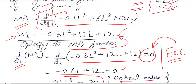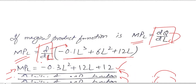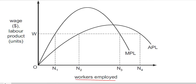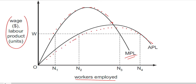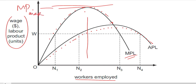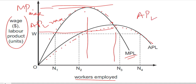We have maximized both the average product of labor and the marginal product of labor. Looking at the diagram, the horizontal axis shows labor and the vertical axis shows the labor product. The marginal product of labor curve lies above the average product of labor curve for this segment. We identified the maximum point of the marginal product of labor as well as the point where the average product of labor is maximized.